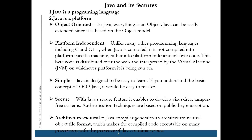Java is platform independent. It's an object-oriented programming language — we will learn OOP concepts in detail in core Java. Platform independent means once you have developed your program on one platform and you try to execute your program in any other environment or any other platform, you can still run it. That's why Java is so popular — it's platform independent.